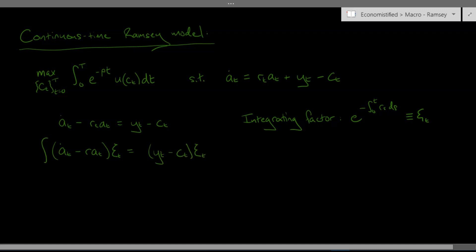Okay so let's multiply both sides of our ODE by this integrating factor and let's integrate both sides with respect to time. And in particular I'm going to integrate them between zero and capital T. And on the left hand side if you do this you just get ξ capital T times a_t minus ξ zero times a zero but ξ zero here remember this is just defined like this